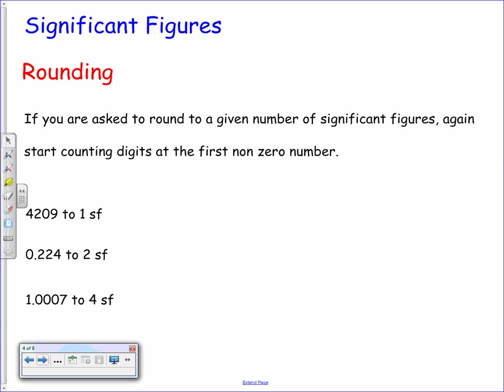If you have to round to a given number of significant figures, again all we need to do is start counting at the first non-zero digit. So we'll take 4209 again — this time we want to round it to one significant figure. We start at the four, and the four is followed by a two. The two tells us we need to round down, so the two, zero, and nine all become zeros. To one significant figure, this is simply four thousand.